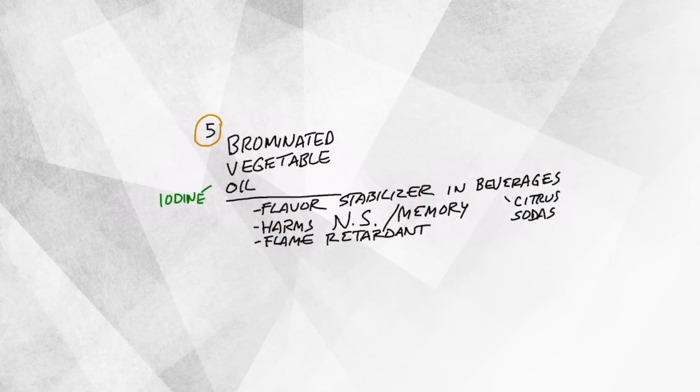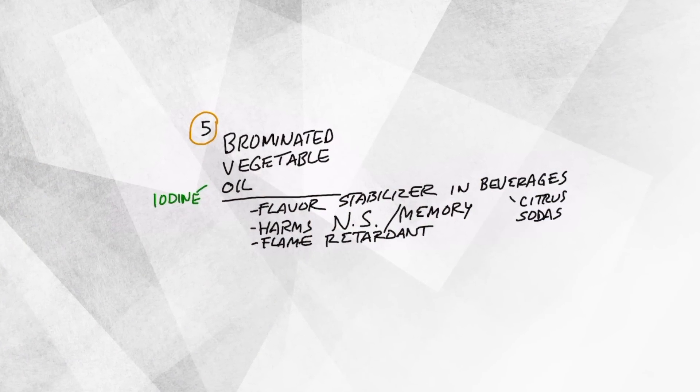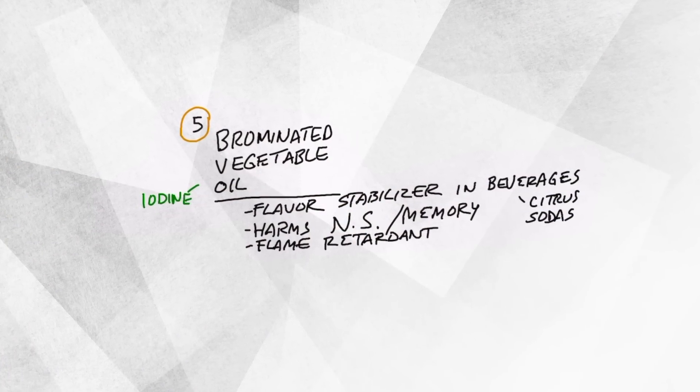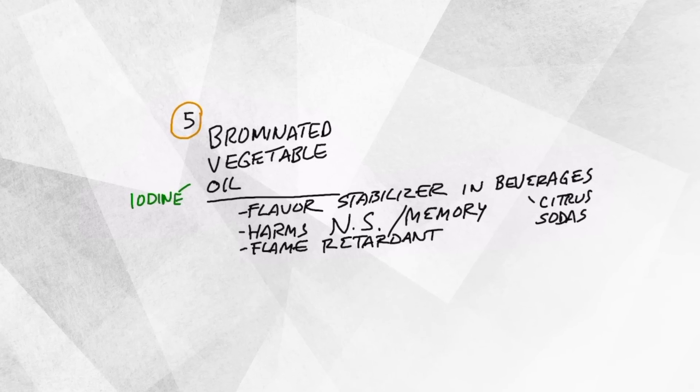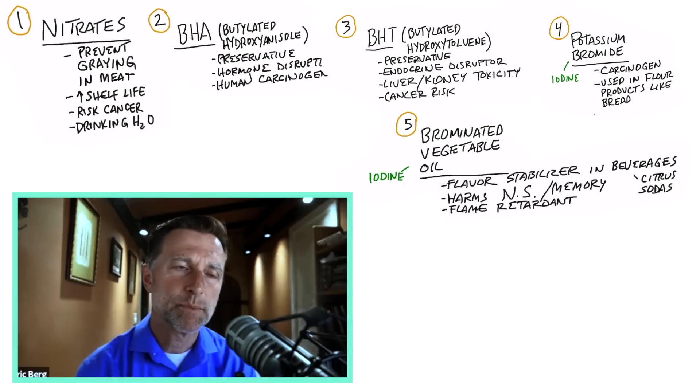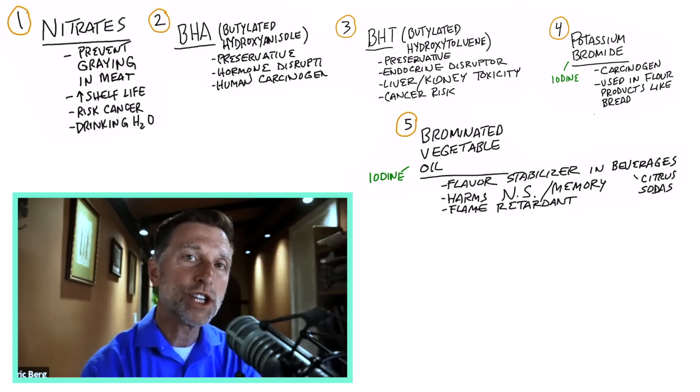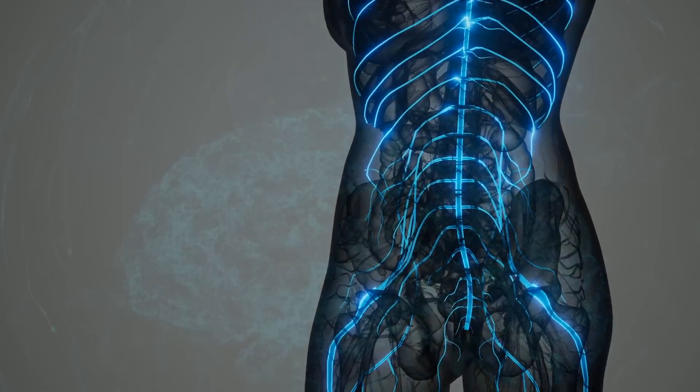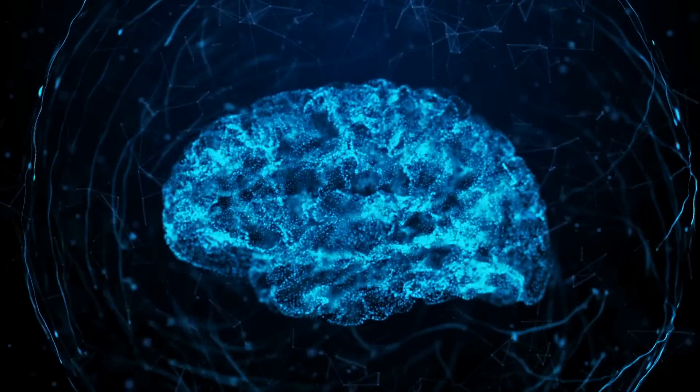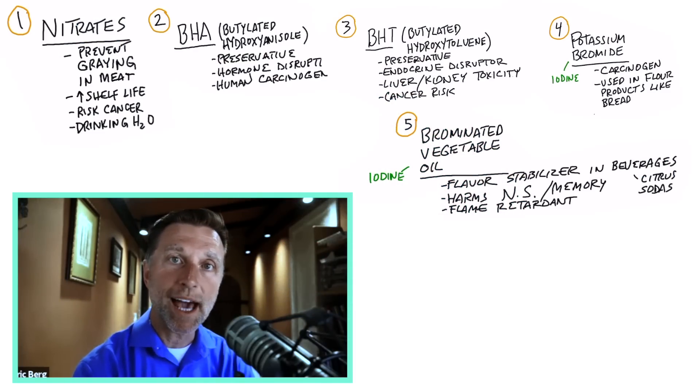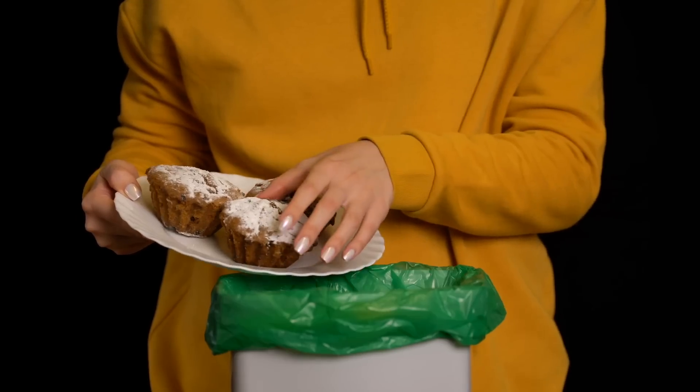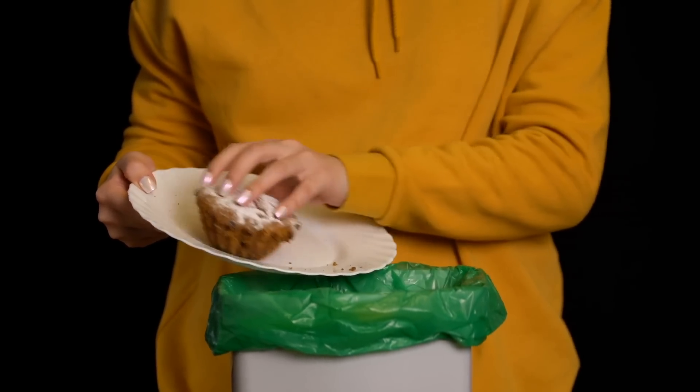The next one also includes bromide. It's called brominated vegetable oil. This is a flavor stabilizer usually in beverages, especially citrus sodas, that keeps the flavoring constant. But it's also a flame retardant. It affects your nervous system, which can affect your brain and memory. This chemical can interfere with iodine, so iodine would be the antidote. But of course, the best option is to just avoid the food that they put these chemicals in.